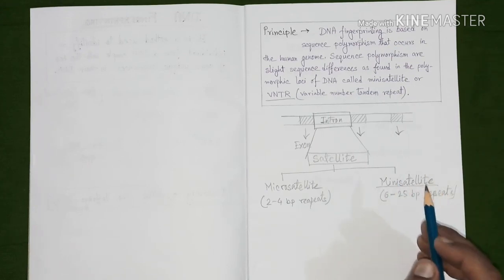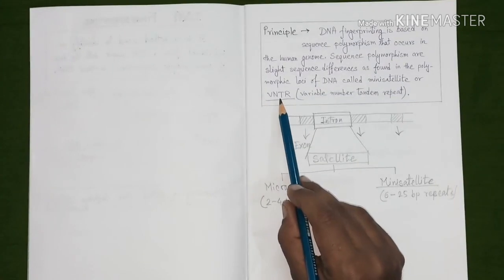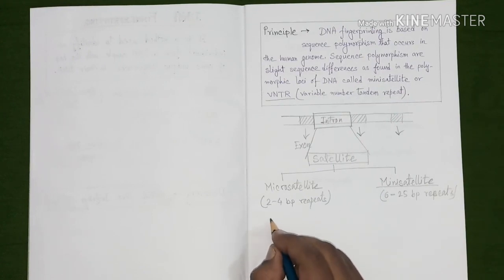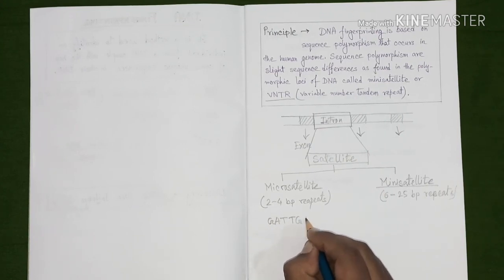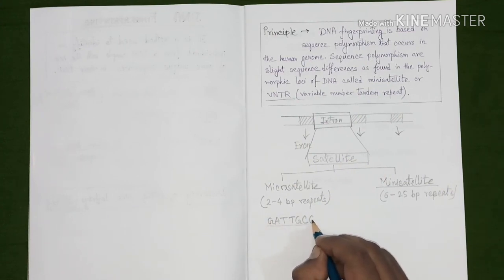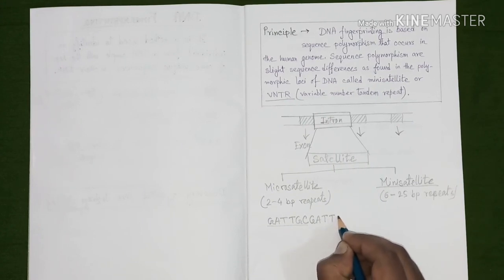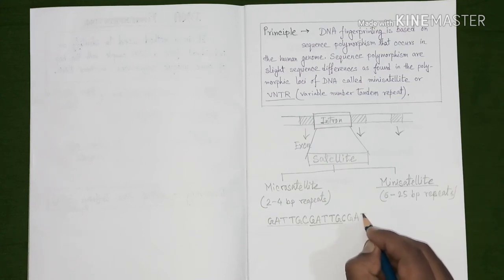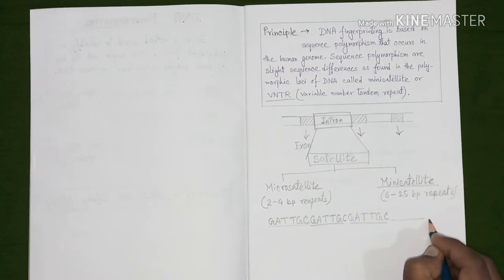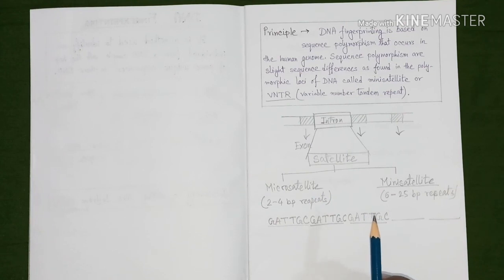Let us know about why mini-satellite is known as variable number tandem repeats. Suppose there is a stretch of six base pair long repeats: G-A-T-T-G-C. Again, this entire set of six base pairs gets repeated G-A-T-T-G-C. If it keeps repeating G-A-T-T-G-C for multiple number of times, then such set of repetitive sequence will be known as tandem repeats.